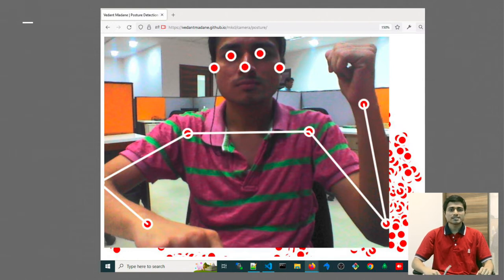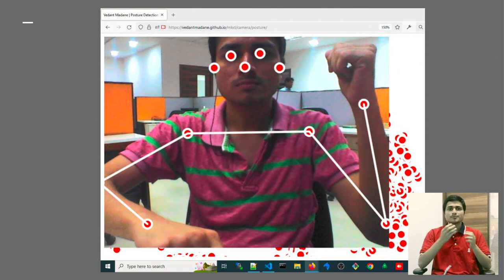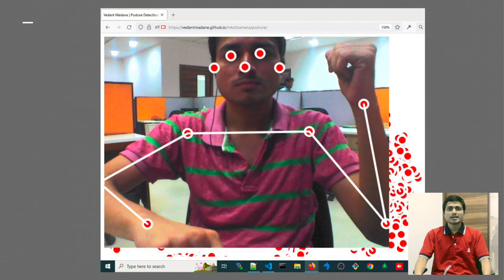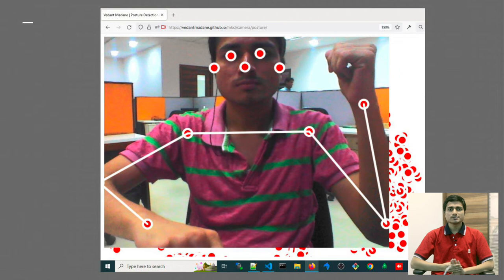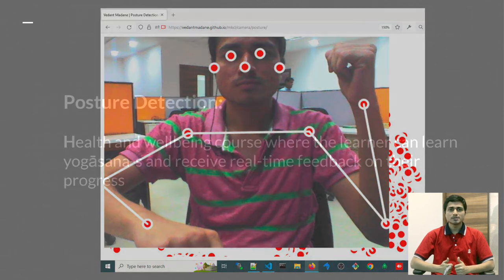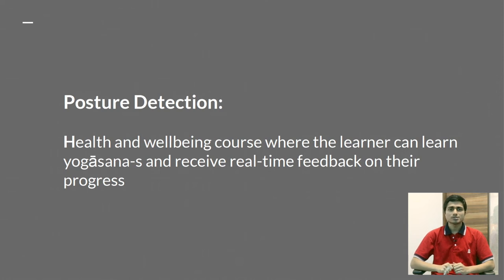Our posture detection software picks up 15 data points: left and right eye, left and right ear, the nose, shoulders, left and right elbow, left and right knees, and the left and right feet. Based on these data points, it creates a skeletal map and gives us feedback on the posture of the person. One application of our posture detection software is when Yogasanas can be done in front of the camera and the learner will receive real-time feedback on his progress.